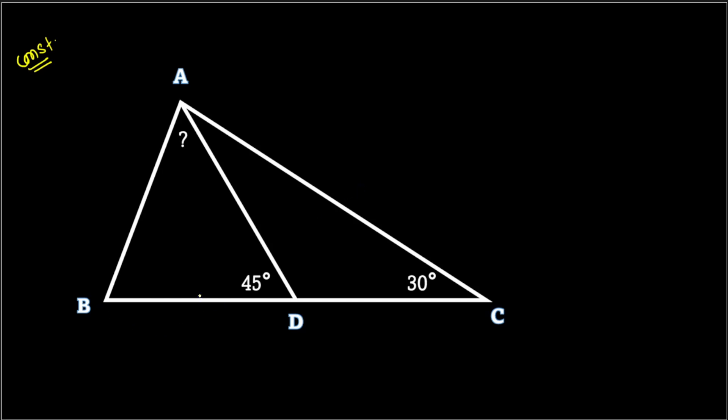First, we have BD equals DC, meaning D is the midpoint. In triangle ACD, the exterior angle is 45 degrees. The remote interior angles are 30 degrees and 15 degrees. So this is the basic data which we have.